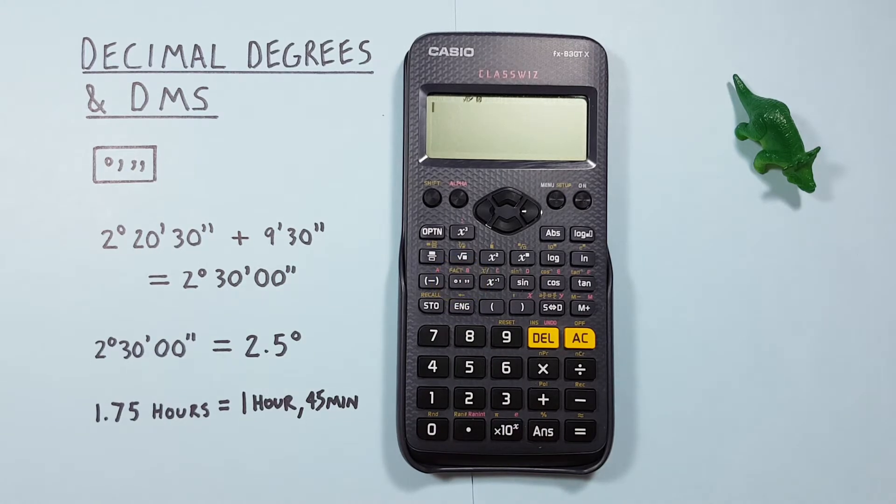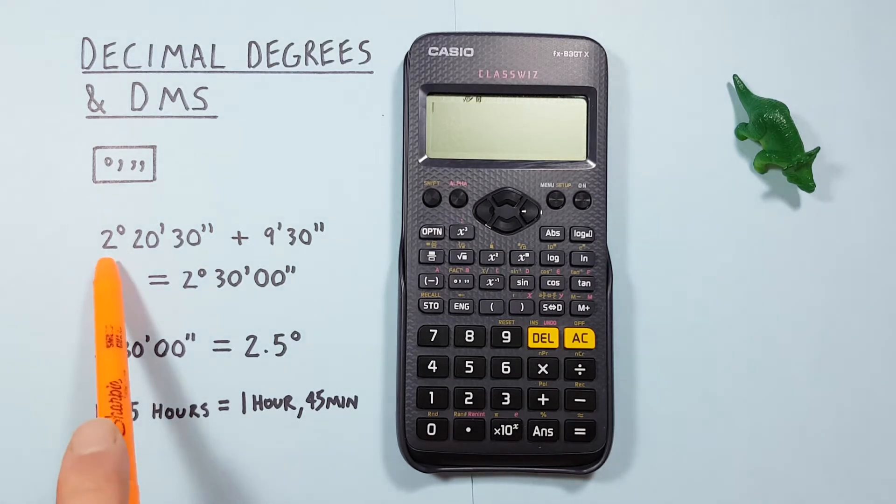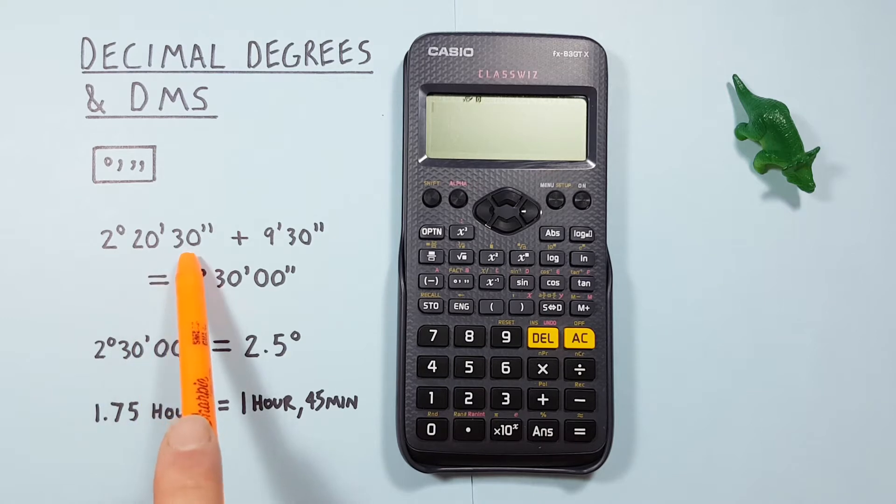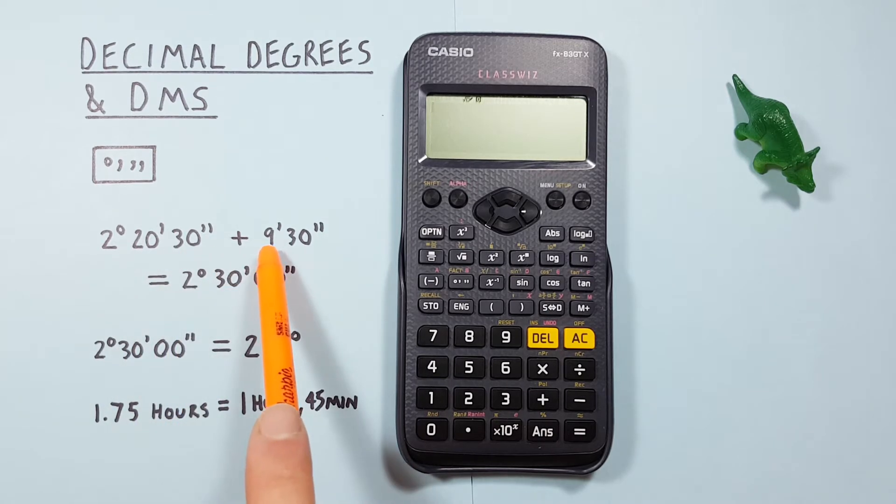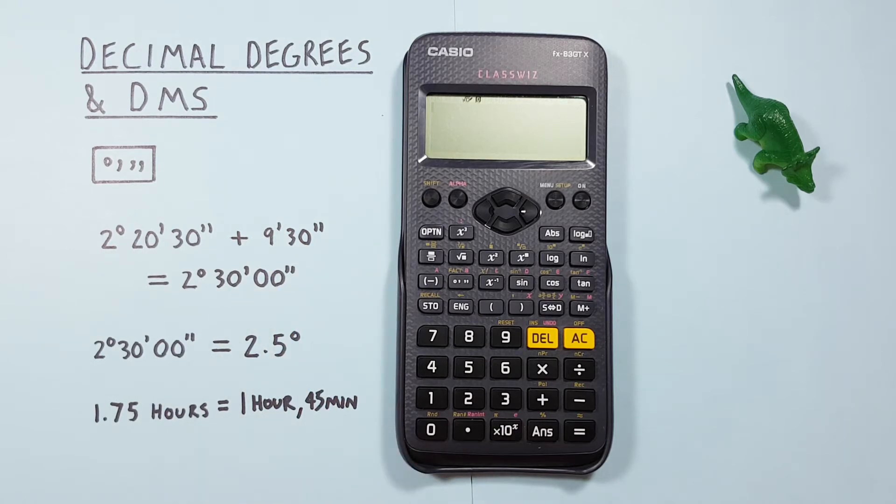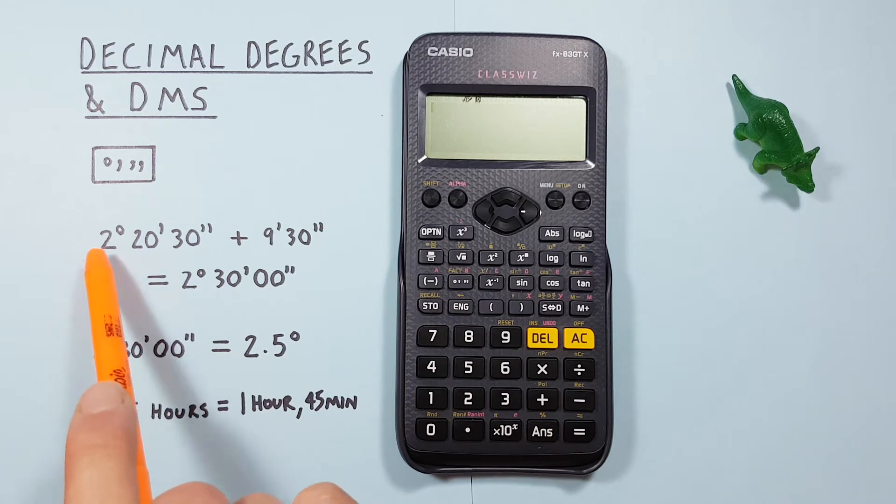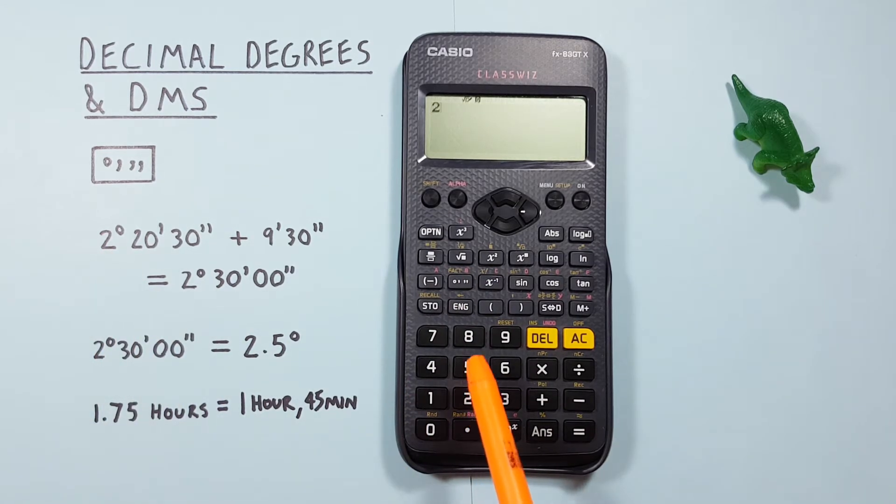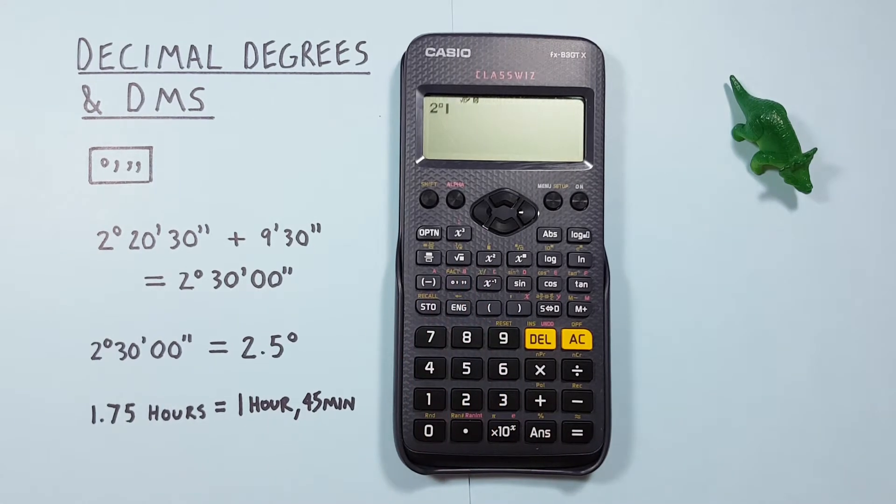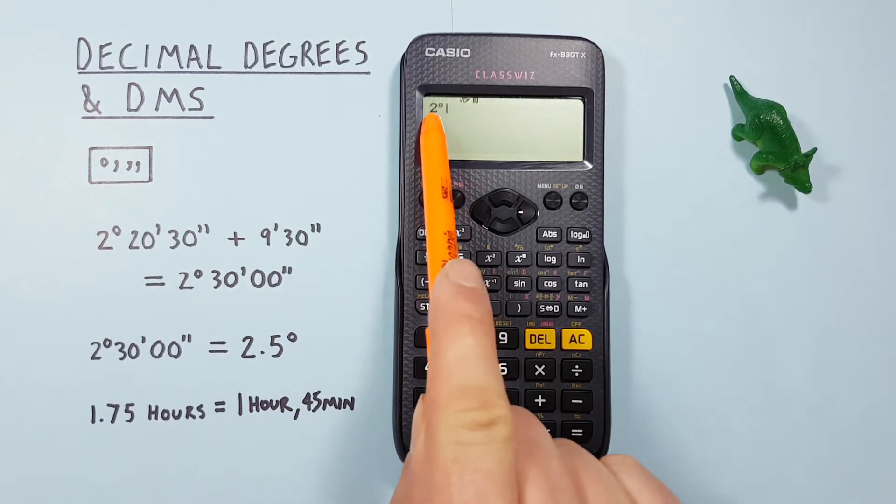If we want to enter a number in degrees minutes seconds and use it in a calculation, let's say we have this here: 2 degrees 20 minutes 30 seconds plus 9 minutes 30 seconds. We can enter it using the degrees minutes seconds key. We start with the degrees, so 2, and then press the degrees minutes seconds key.